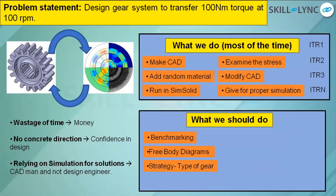Then we determine the strategy and the type of gear. Is it a herringbone gear, a spur gear, a helical gear? Are you going to use some hardening coatings? There are different types in the gearing catalog. Different strategies depend on time constraint, space constraint — how much space do you have? When you create a free body diagram, you get a kinematic diagram showing load, angular momentum, force, and velocities.